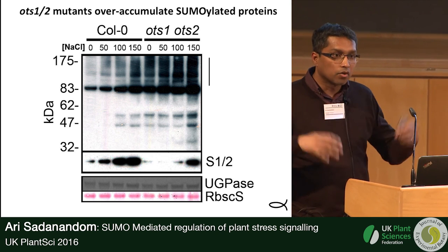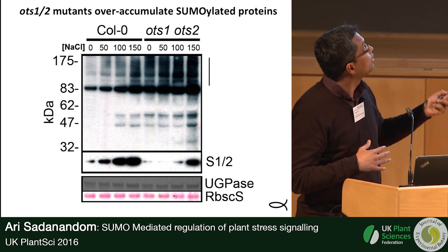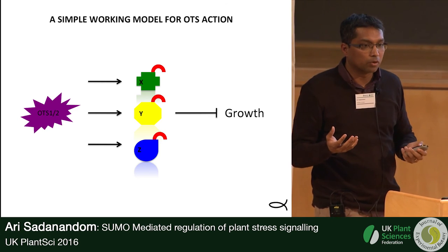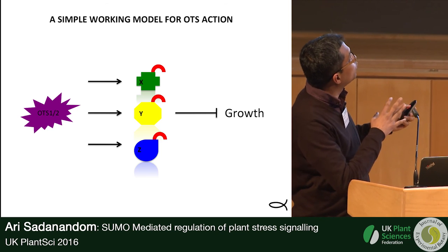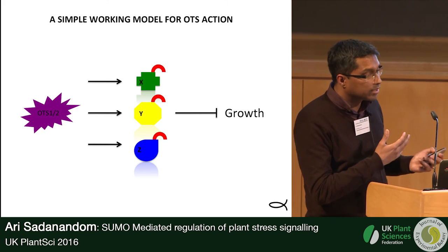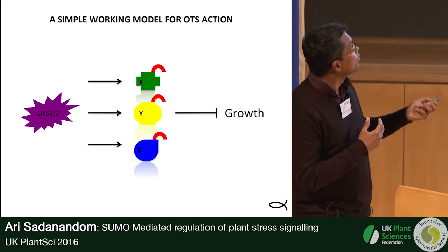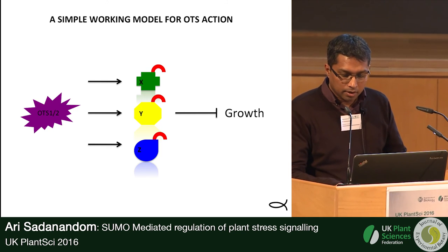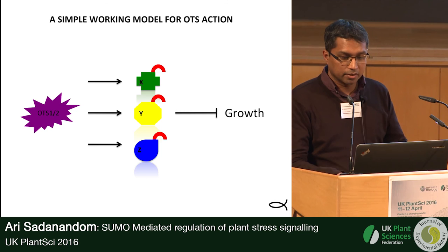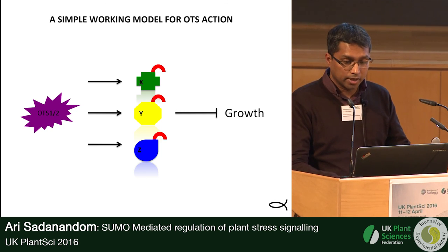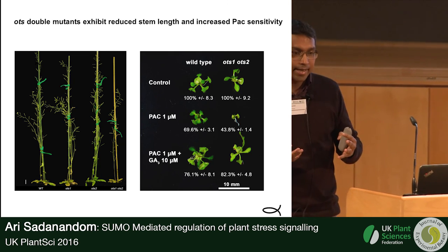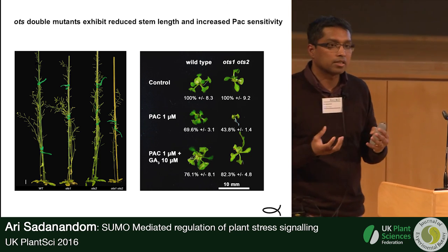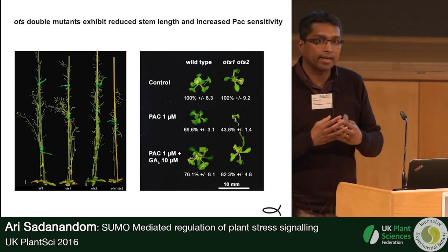When you overexpress the OTS SUMO protease, you remove these sumoylated target proteins and de-sumoylate them, allowing plants to recover and grow on salt. What Arabidopsis does is that as soon as stress occurs, it degrades the SUMO protease, sumoylated proteins accumulate, and that blocks growth. The model is: when stress comes, the OTS SUMO protease is degraded, sumoylated target proteins accumulate, and they block growth. Our way into understanding this is through the SUMO protease mutant phenotype — and one target I'll discuss today is DELLA. We also published that PHY B is sumoylated.